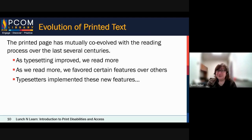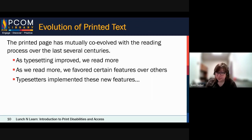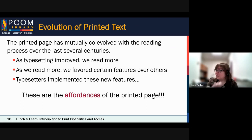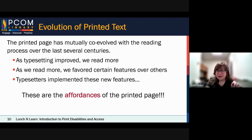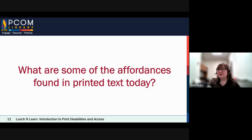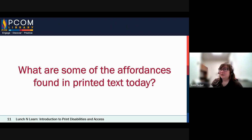The act of reading online has also changed the nature of our reading — we read differently on a computer screen versus a book, and differently again on e-reader devices and phones. All these features that occur in text are affordances — another vocabulary word. Affordances are basically what features in a technology make it good to use, more beneficial. So I want to ask you: what are some of the affordances found in printed text today? When you're reading something, what are the things that make it an easier read for you? Please put these in the chat — there are no wrong answers.